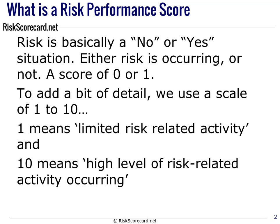That's a bit crude, so we want to add a little bit of detail. At riskscorecard.net, we use a scale from 1 to 10. A score of 1 means limited risk — the activity indicates not much risky activity is occurring. And 10, at the opposite end, is a high level of risk-related activities occurring.